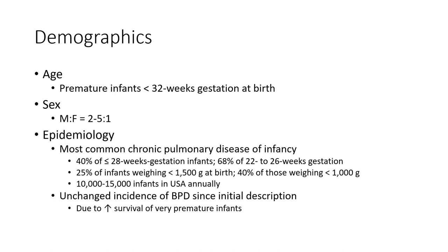Demography: a premature infant less than 32 weeks gestation at birth, more predominant in males. Epidemiology: most common chronic pulmonary disease in infants. Forty percent of less than 28 weeks gestation infants, 68% of 22 to 26 weeks gestation. Twenty-five percent of infants weighing less than 1,500 grams at birth, 40% of those weighing less than 1,000 grams. Ten thousand to 15,000 infants in the U.S. annually.